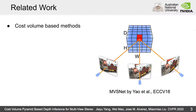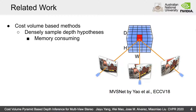For high-accuracy depth estimation, cost volume-based methods typically inference on high-resolution images and sample depth hypotheses densely across the whole depth range, which leads to large GPU memory consumption.